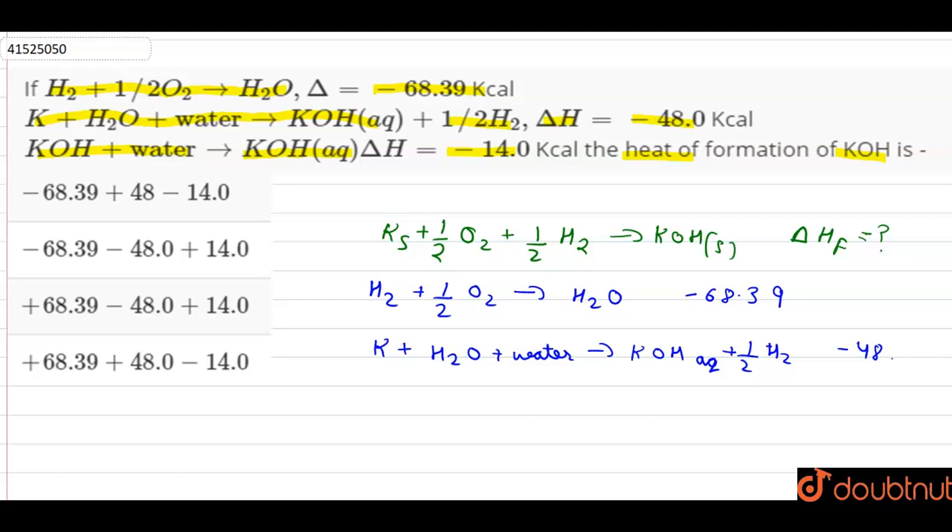And the last equation given to us? KOH plus water gives us KOH aqueous. Its delta H is minus 14. So let's assume this is our first equation, this is second, and this is our third equation.